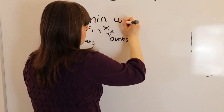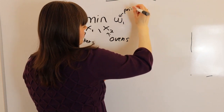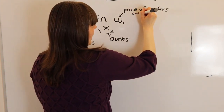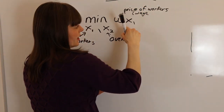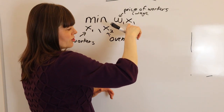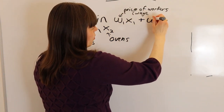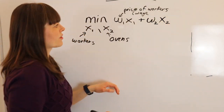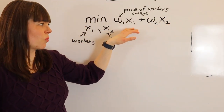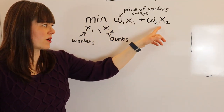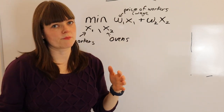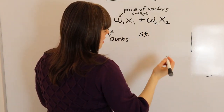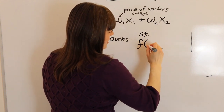What we're minimizing is actually going to look a little bit like a budget constraint. We have the price of workers — their wage — times the quantity of workers (number of worker hours), plus the price of an oven times the quantity of ovens you're going to buy. This looks exactly like one side of a budget constraint: price times quantity plus price times quantity, and this is the total amount the firm spends.